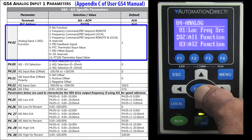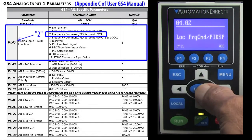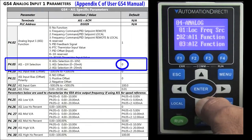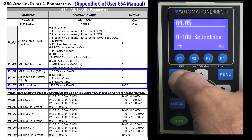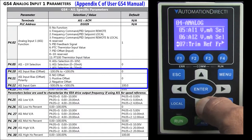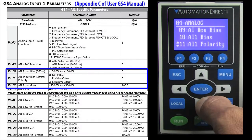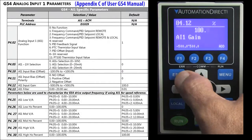First we tell analog input 1 that it is the local frequency source. Analog input 1 defaults to 0 to 10 volts, which is what we want, and we don't want to change the curve with additional bias or gain, so we'll leave those at their default values.